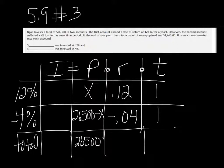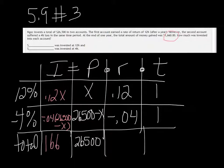So to get our interest, we're going to multiply the principal times the rate. So we're going to get 0.12X, and it's going to be negative 0.04 times 26,500 minus X. And we're also given that the total amount of money gained was $1,660, so that's the total interest. How much money you make is your interest.